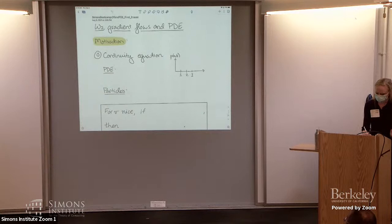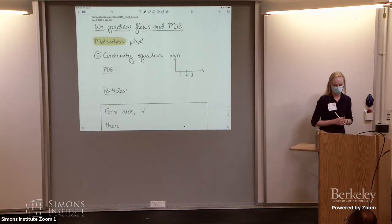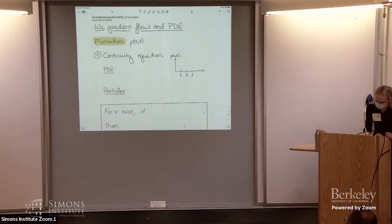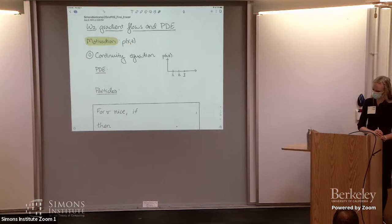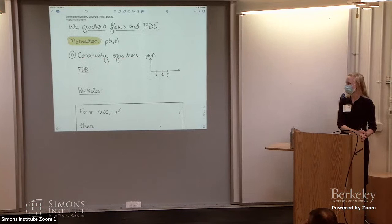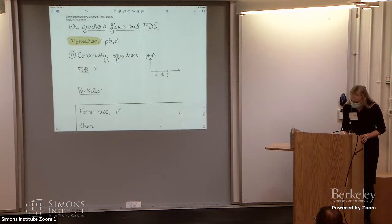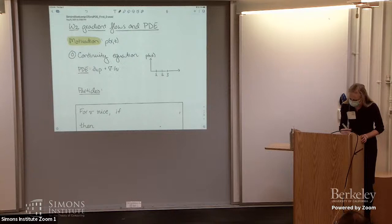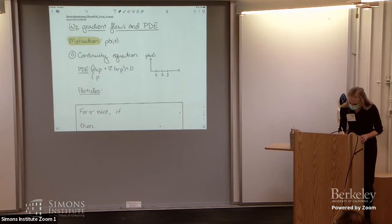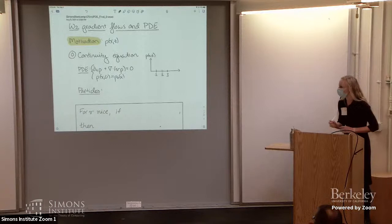I'm going to give a few examples of PDEs that might be of interest to you. Throughout my talk, all the PDEs I mention will describe the evolution of a density rho, which depends on space and time, where x is a vector in R^d. The most fundamental equation I'll mention is the continuity equation: the time derivative of rho plus the divergence of a given velocity field v times rho equals zero. We think of this as an initial value problem—we prescribe the density at time zero and watch how it evolves.